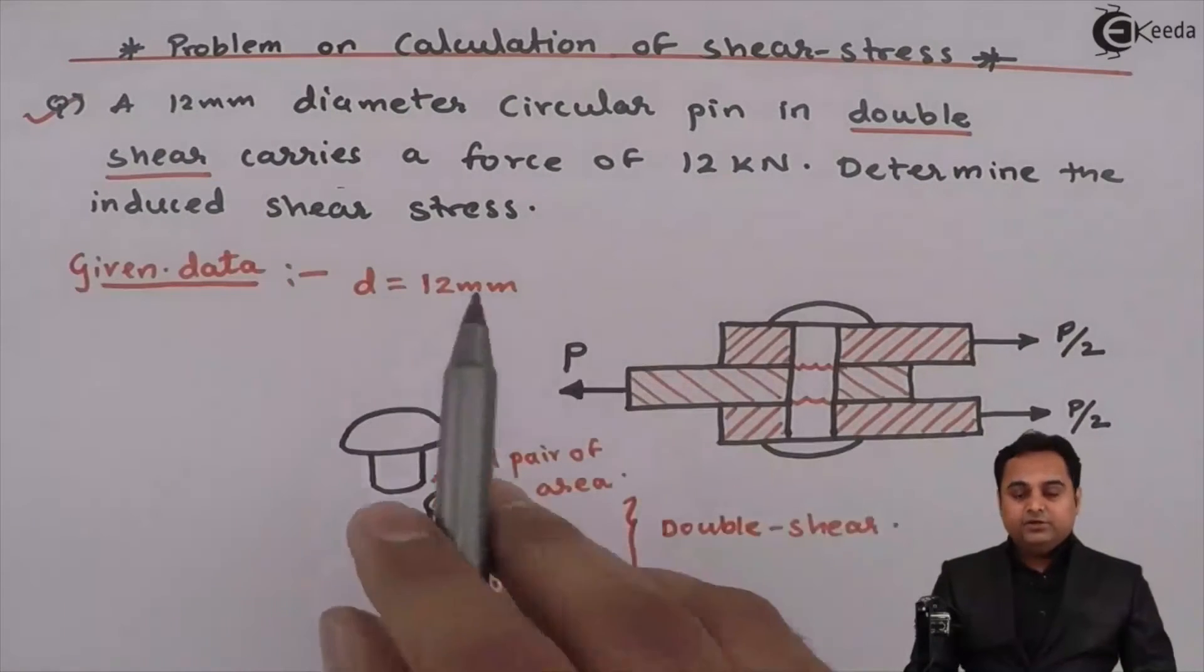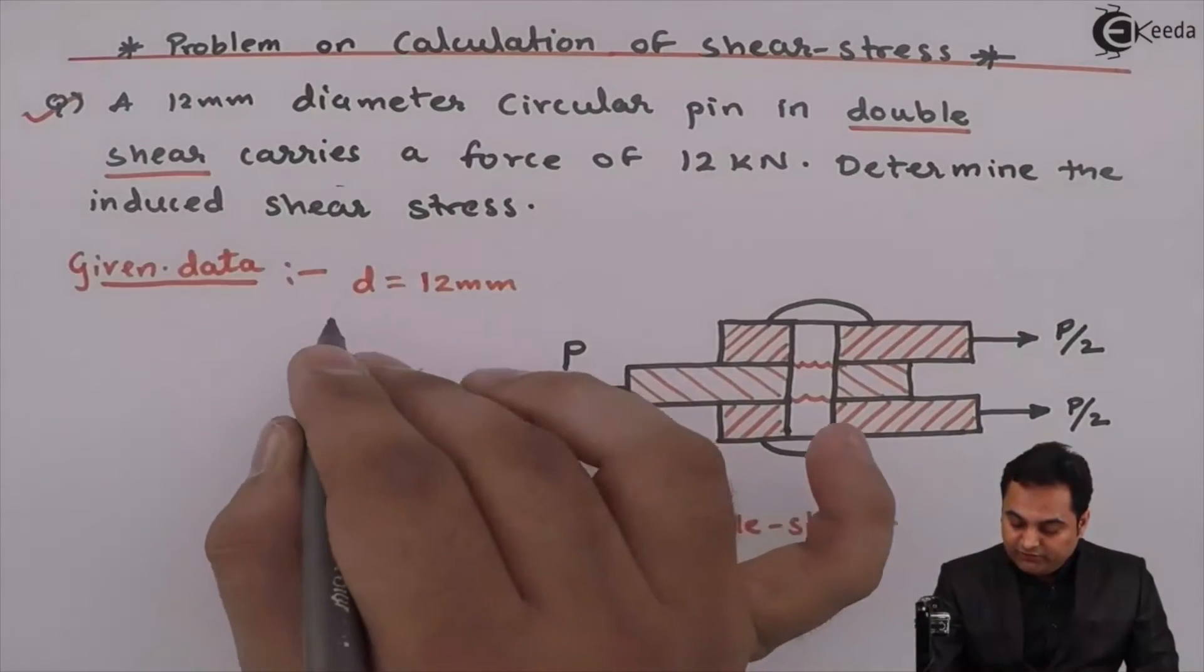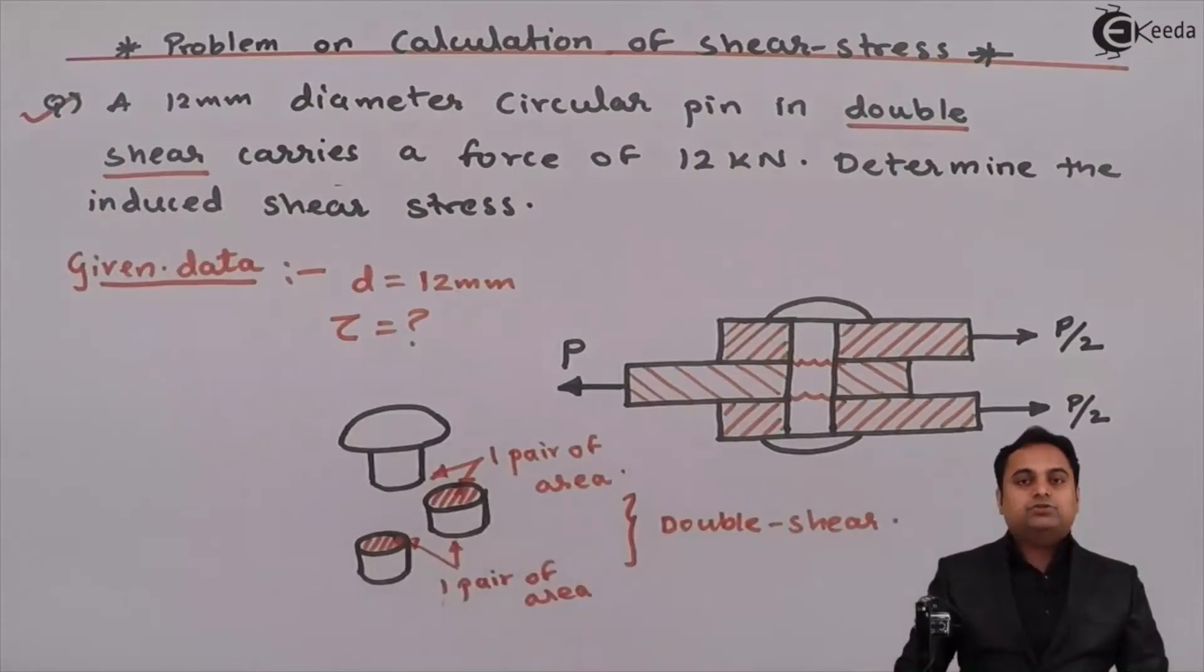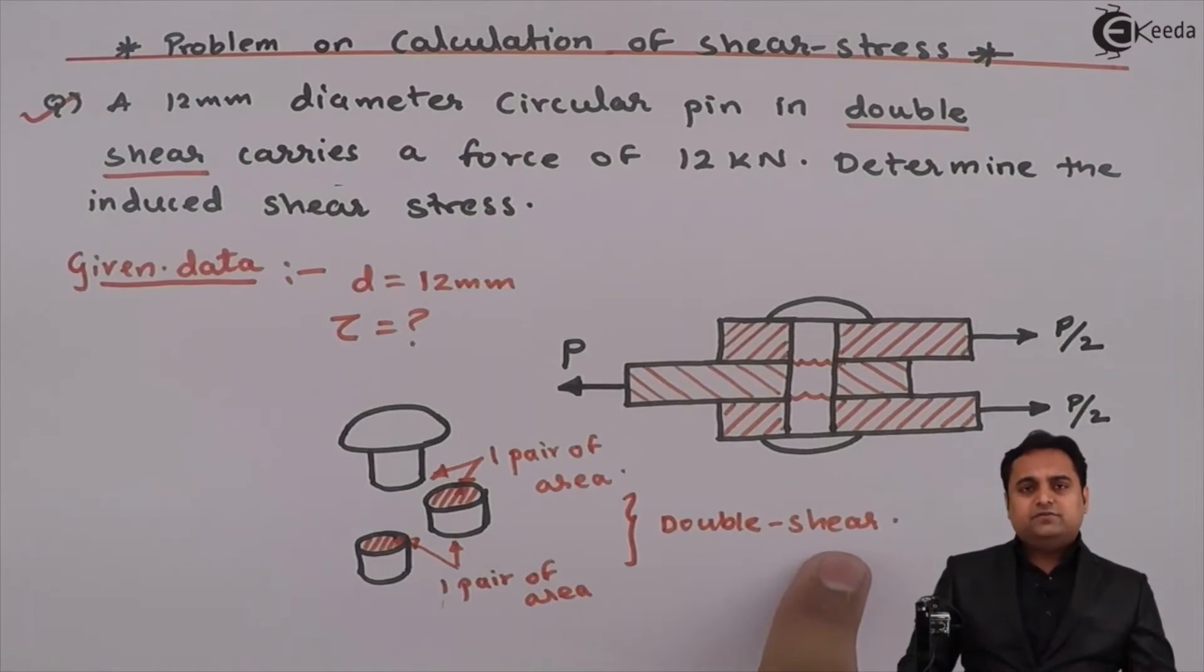The question is determine the induced shear stress. So we have to find out how much is the shear stress which is induced in this pin or we can say rivet. So to calculate the shear stress, let us start with the calculation of shearing area first. As I have told, this is a case of double shear. So we would be getting two pair of area.